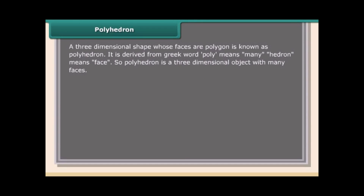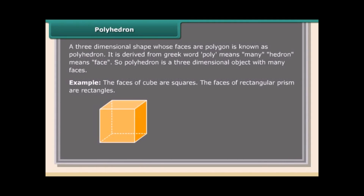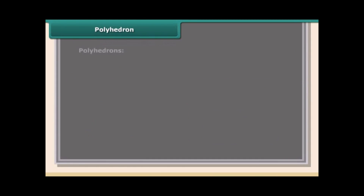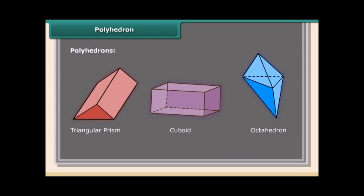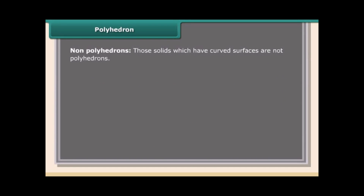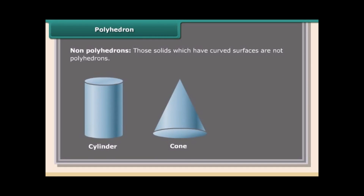Polyhedron: A three-dimensional shape whose faces are polygons is known as a polyhedron. It is derived from the Greek words 'poly' meaning many and 'hedron' meaning face. Examples: the faces of a cube are squares; the faces of a rectangular prism are rectangles. Polyhedrons include triangular prism, cuboid, and octahedron. Solids with curved surfaces — such as cylinder, cone, and sphere — are not polyhedrons.